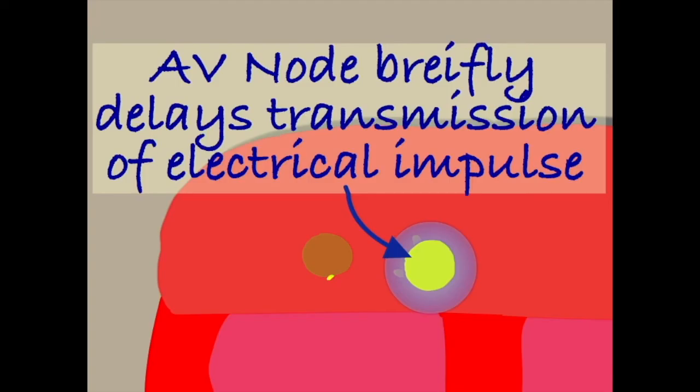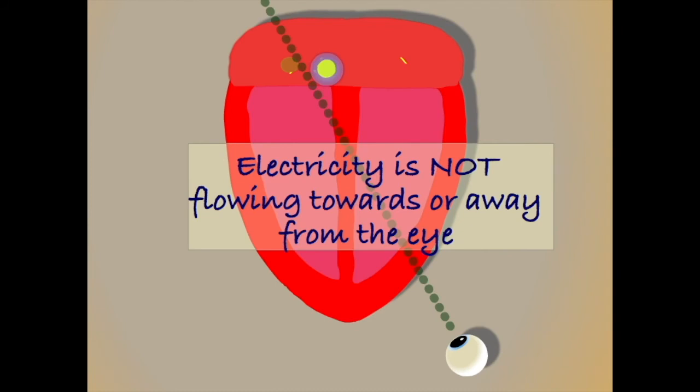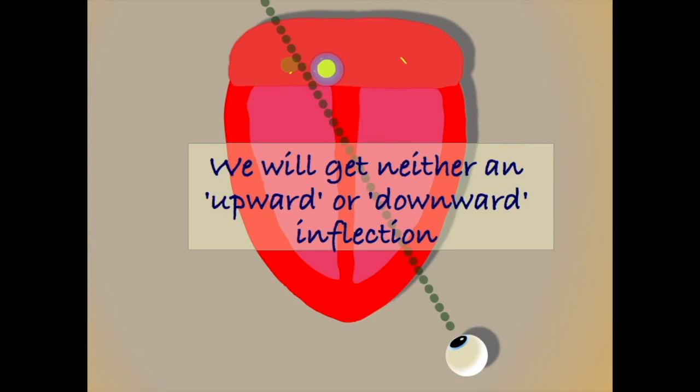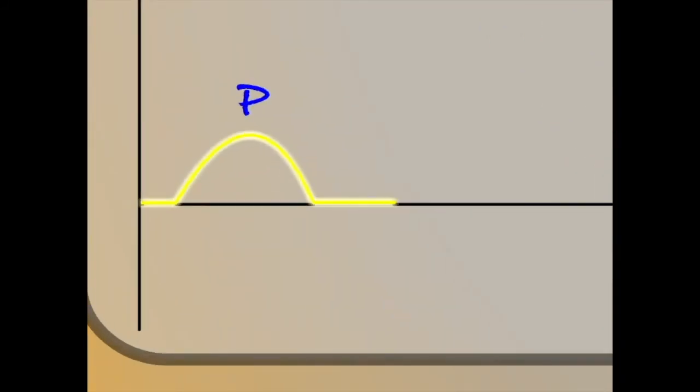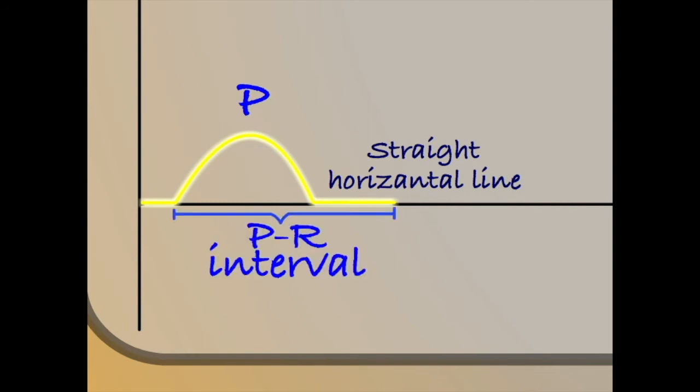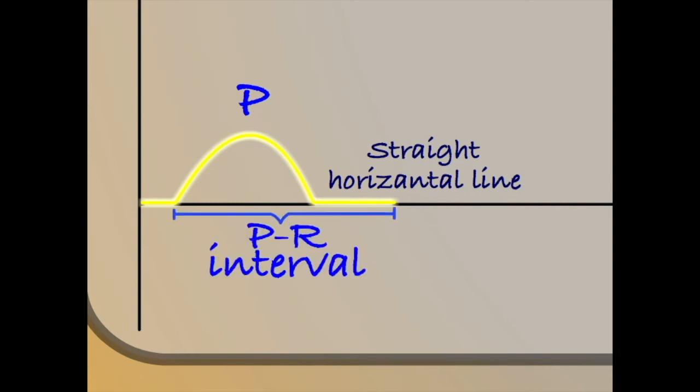The AV node will then briefly pause the flow of electricity to give the atrium time to push its blood down into the ventricles. As electricity is flowing neither towards or away from the eye, we will get neither an upward or downward inflection on our ECG. Instead, we will get a straight horizontal line as time passes. We will label this the PR interval. It represents how long a pause the AV node causes in the conduction of the electricity.